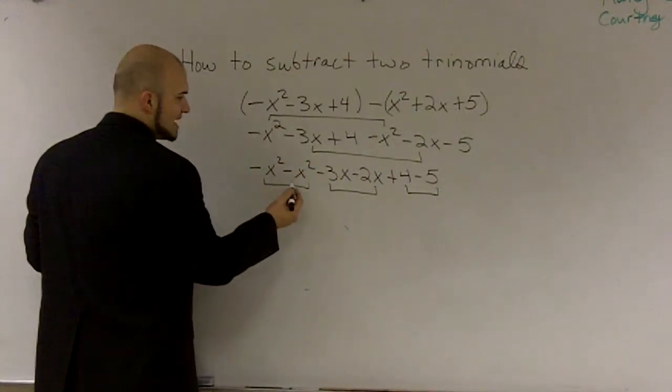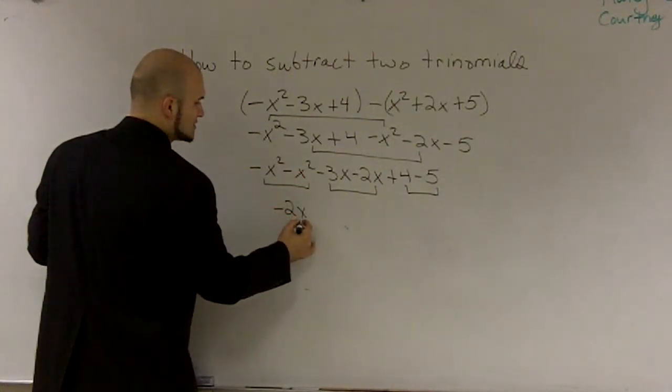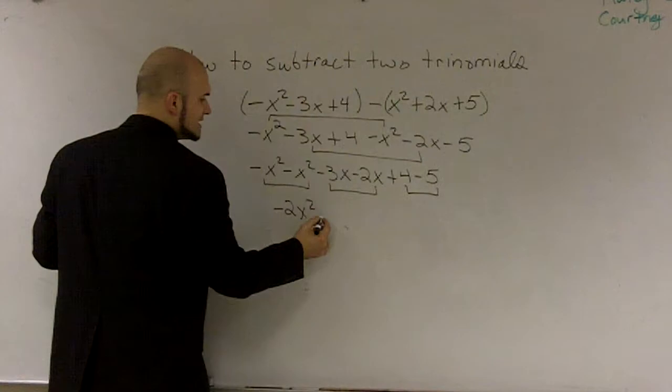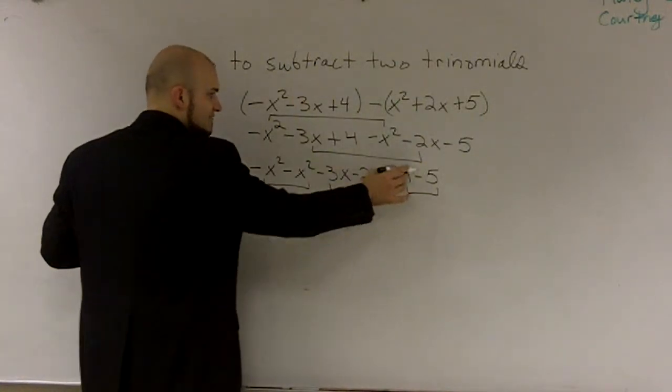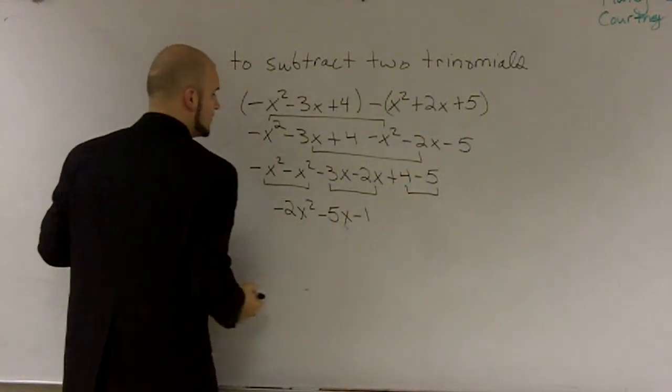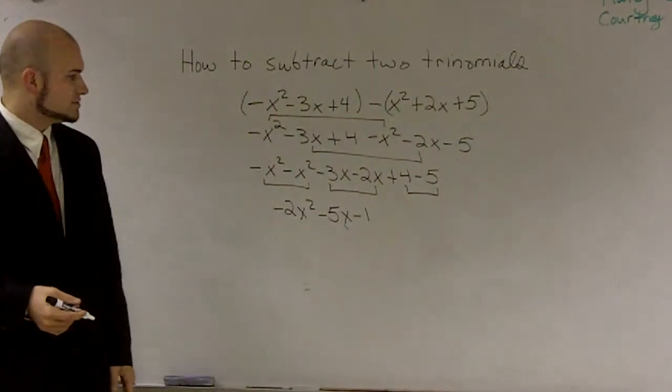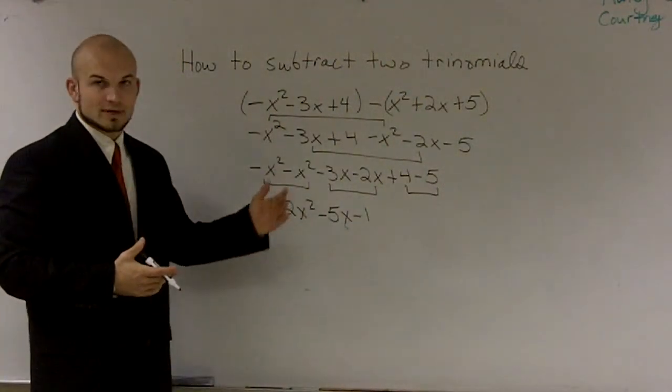So an x squared minus an x squared is a negative 2x squared. A negative 3x minus 2x is a negative 5x, and a 4 minus 5 is a negative 1. So that's how you subtract two trinomials, and you get a trinomial.